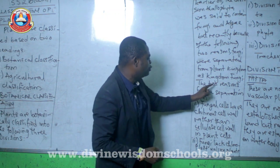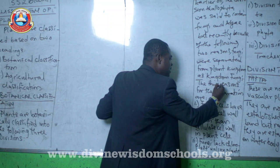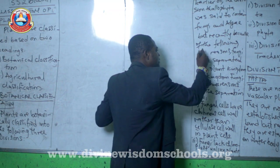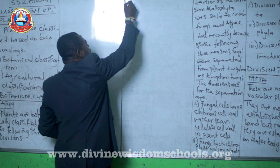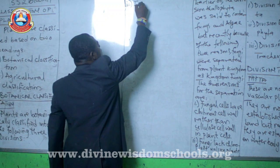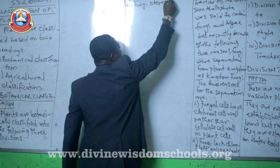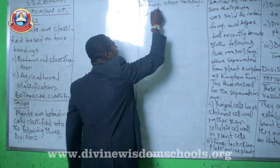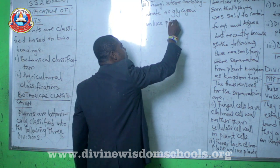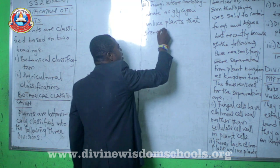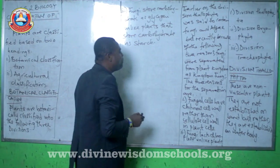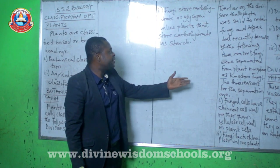I want to make a correction — there are actually three reasons, not two. The third reason for separating fungi into a separate kingdom is that fungi store carbohydrates as glycogen, just like animals, but plants store carbohydrates as starch.